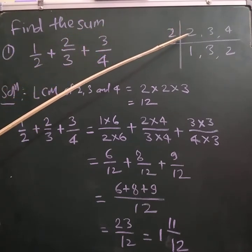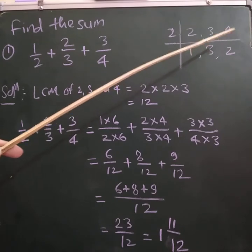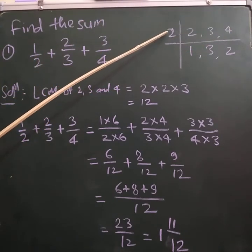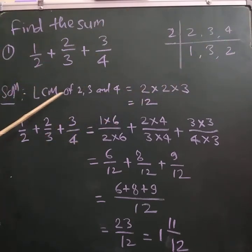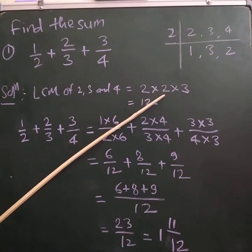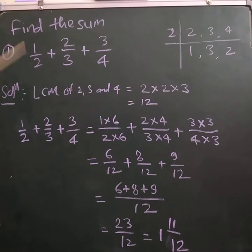See here to find out LCM of 2, 3 and 4, we get the prime factors 2, 1, 3 and 2. So LCM of 2, 3 and 4 equals 2 × 2 × 3 = 12.